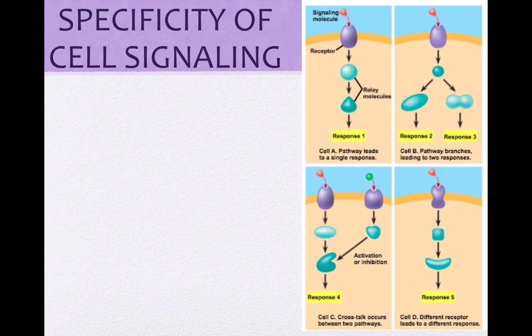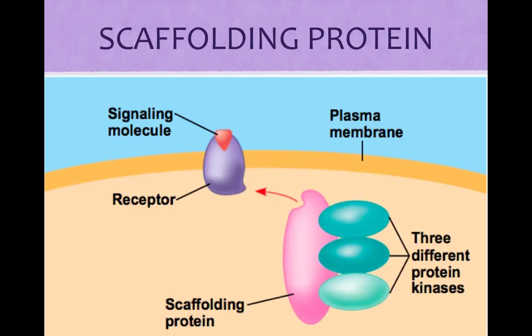The specificity of cell signaling depends on the particular proteins a cell possesses, which determines what signal molecules it responds to and the nature of the response. Four cells can respond to the same signal — the orange triangle — in different ways because each has a different set of proteins. Note, however, that the same kinds of molecules can participate in more than one pathway. The efficiency of signal transduction may be increased by scaffolding proteins, which are large proteins with several relay proteins attached, enhancing the speed and accuracy of signal transfers.